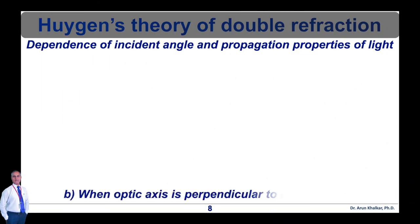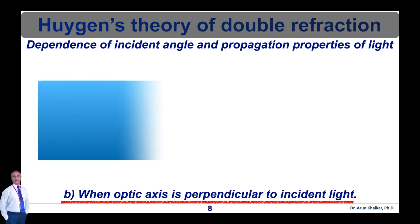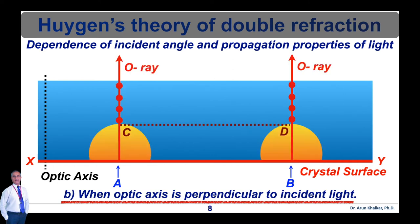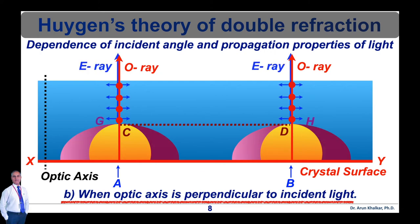In the second case, when the optic axis is perpendicular to the incident light — as shown in figure B — an unpolarized wave front A-B is incident normally on the crystal surface. The optic axis lies in the plane of incidence and is perpendicular to the crystal surface. As the light is incident in the direction of the optic axis, the ordinary ray and extraordinary ray travel with the same speed along the optic axis. As a result, they travel in the same direction with the same velocity. Hence, double refraction is not observed, and the ordinary and extraordinary wave fronts C-D and G-H coincide at all instances.